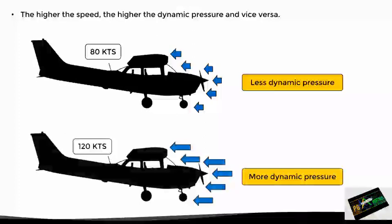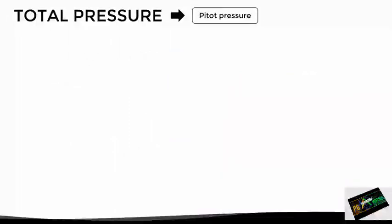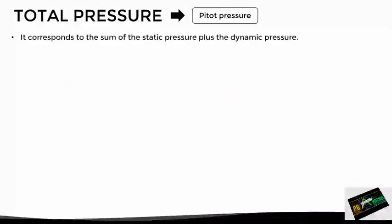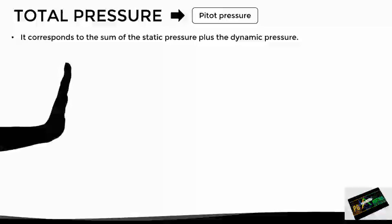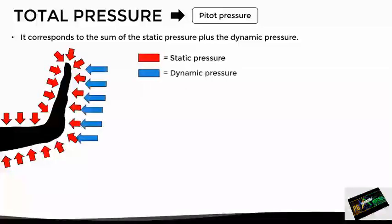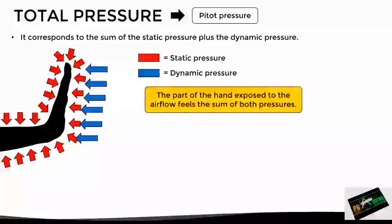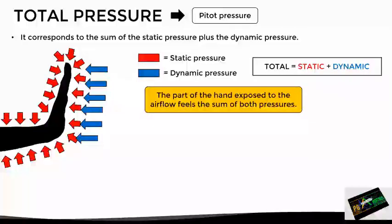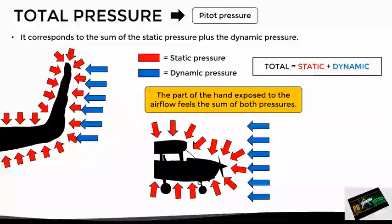Having already seen the definition of dynamic pressure, let's now see the last one, which is the total pressure, also known as pitot pressure. This corresponds to the sum of the static pressure plus the dynamic pressure. For example, let's suppose we are traveling on the highway and put one hand out the window such that the palm is exposed to airflow. In this case, the hand will experience two pressures: the static pressure that is always present, and the dynamic pressure due to the airflow. So in the palm of your hand you will experience the sum of both — the static pressure and the dynamic pressure — and this is exactly what happens with an aircraft moving through the air.